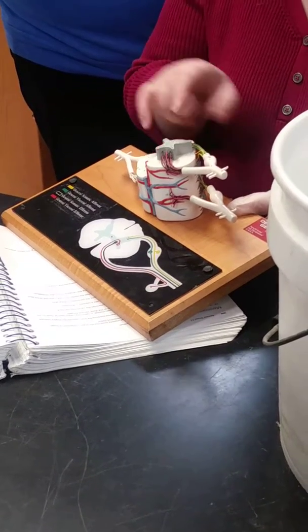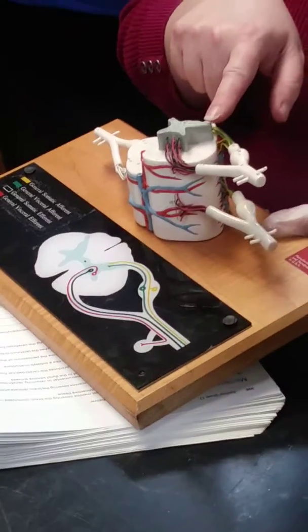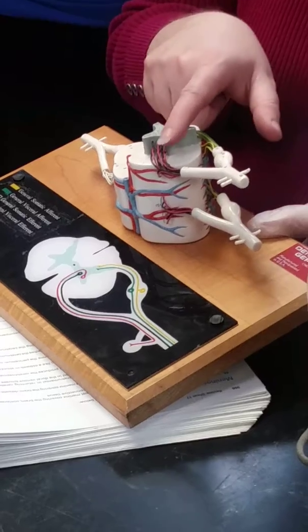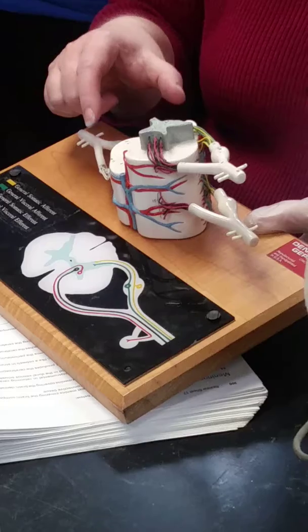So if we're looking at our gray matter, you have anterior horn, lateral horn, dorsal horn, or posterior. So you can use ventral or anterior, lateral, dorsal, or posterior.